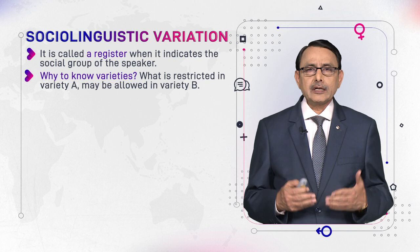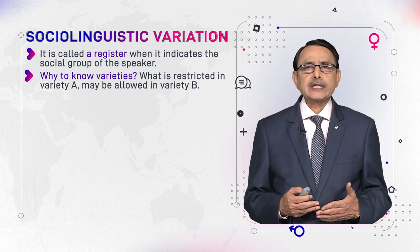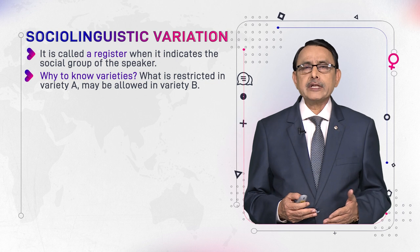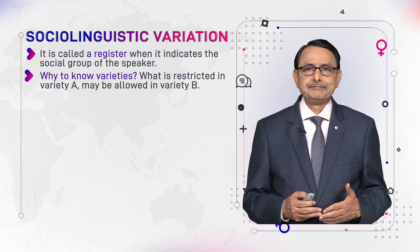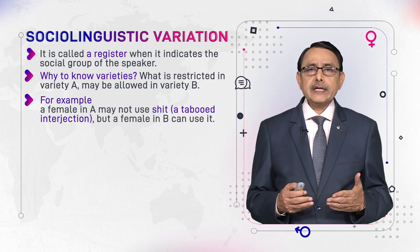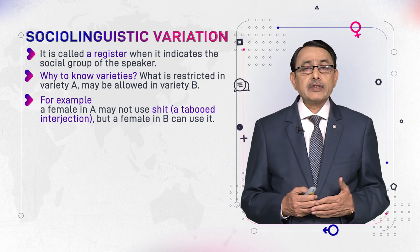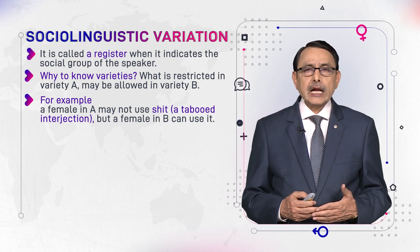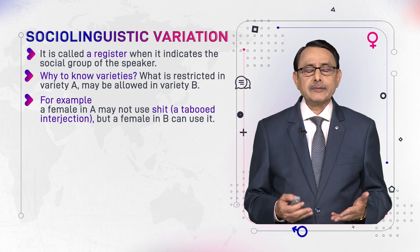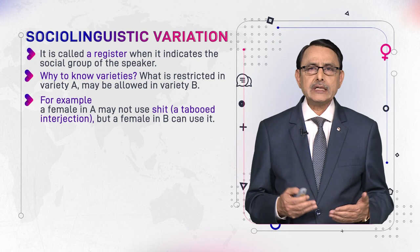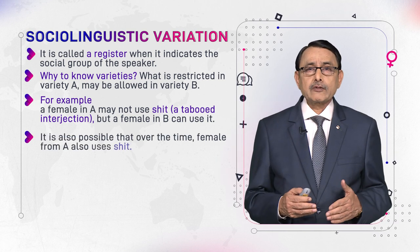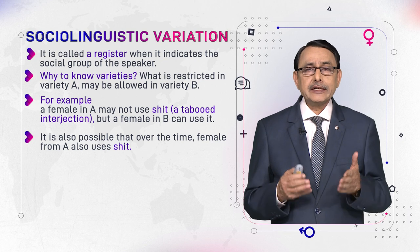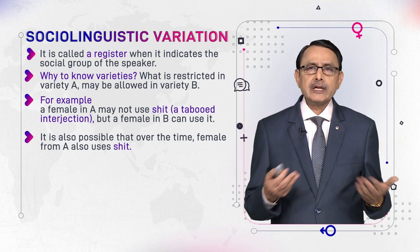Why should one know about varieties, especially to understand the relationship between gender and language? It is because sometimes some language expressions are allowed in one variety and the same expressions are disallowed in another variety. For example, in variety A of a language, a certain expression may be inappropriate for female speakers, but in variety B of the same language it is acceptable.